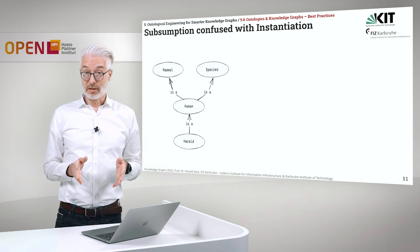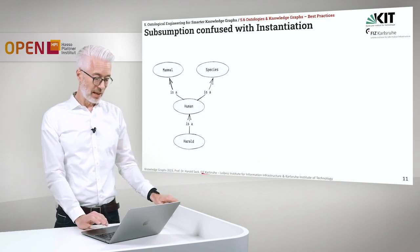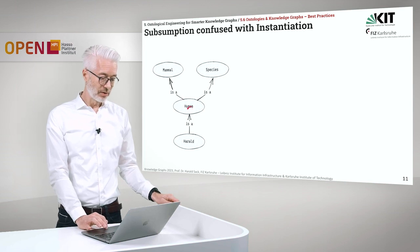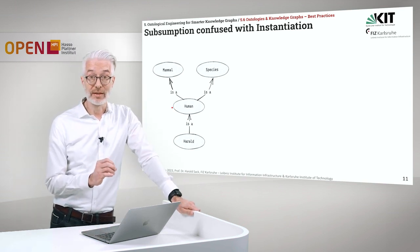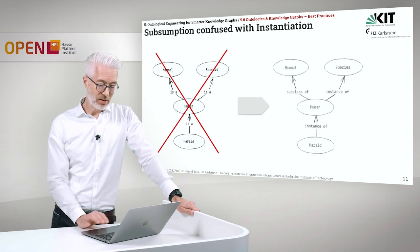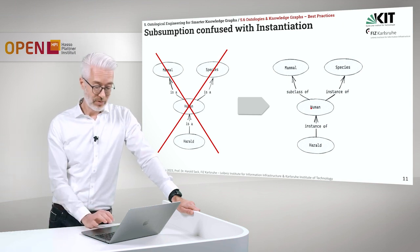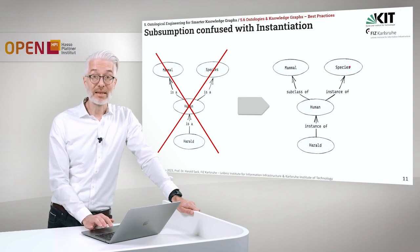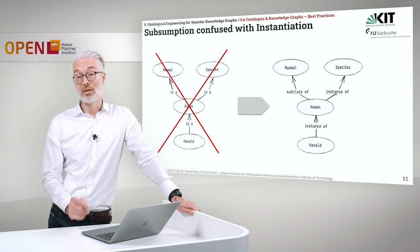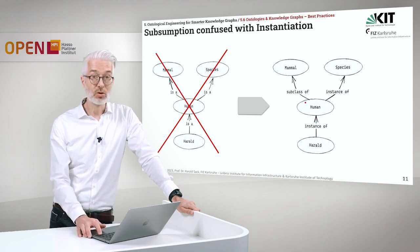Let's take a first example: subsumption confused with instantiation. Consider: Harald is a human, which is clear, and human is a mammal — that's also clear — as well as human is a species. Harald is an instance of human — I'm an element of the set of humans. However, human is a subclass of mammal: they are both classes related via subclass. While human is a specific species, so it's an instance of species. So often instance-of relationships, which would be reflected with RDF type, are mistaken with subclass relationships — and they should not be mixed.